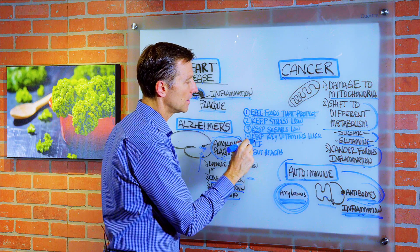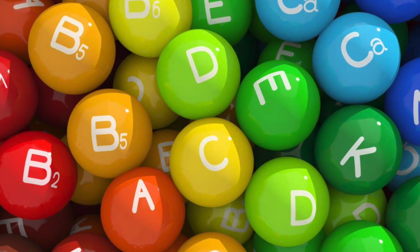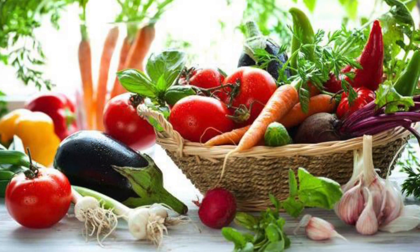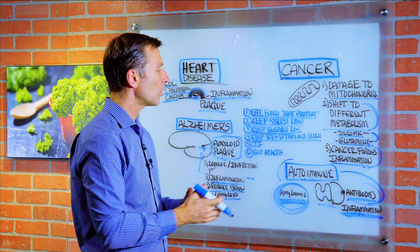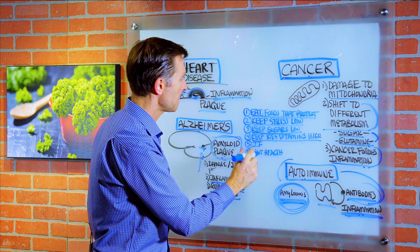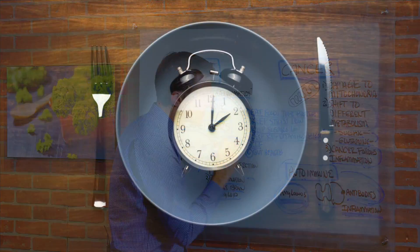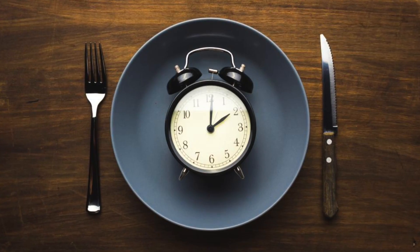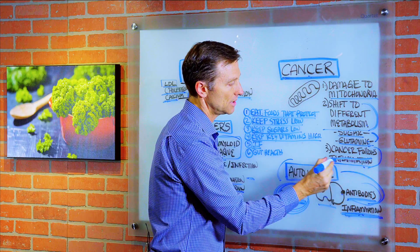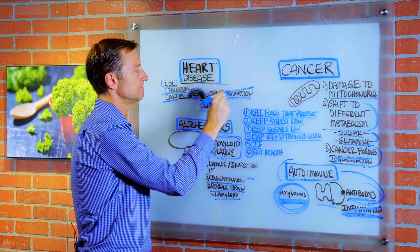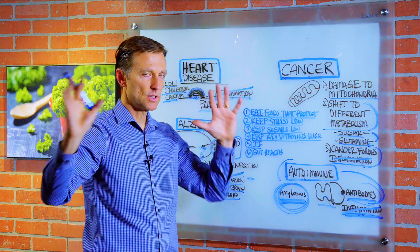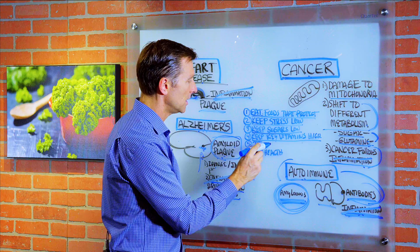Number four: keep your vitamins high. Eat foods that are very vitamin-rich, nutrient-rich, and mineral-rich. Increasing the quality of those nutrients is very important in protecting the tissues. Number five: intermittent fasting. Intermittent fasting is the best tool to get rid of inflammation. You can take that piece of the puzzle out of the picture by doing IF — it's very therapeutic.